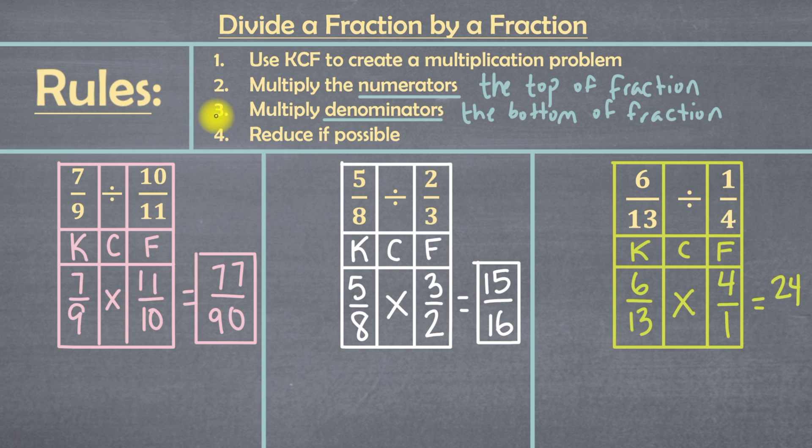Next, we'll go to rule 3, which is to multiply our denominators. And that's just the bottom of the fraction. And that means in this fraction, our denominator is 13. And in this fraction, our denominator is 1. So we've got 13 times 1, which equals 13. Now, the only issue with this answer is that it's an improper fraction. What that means is the top of our fraction is bigger than the bottom of our fraction. And we can't leave it like that. So we're going to have to do a little bit of extra work for this one.